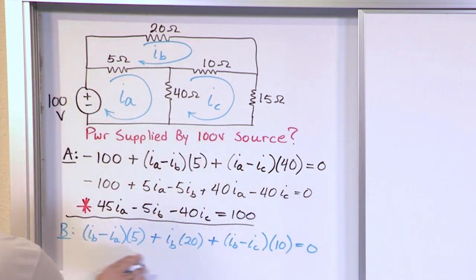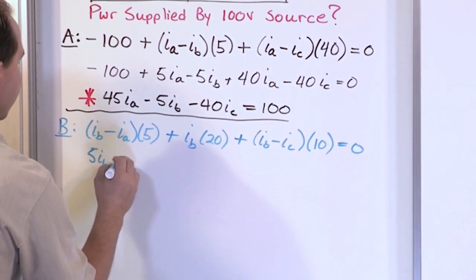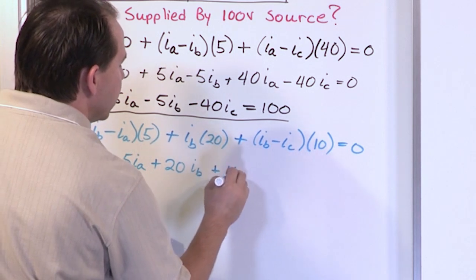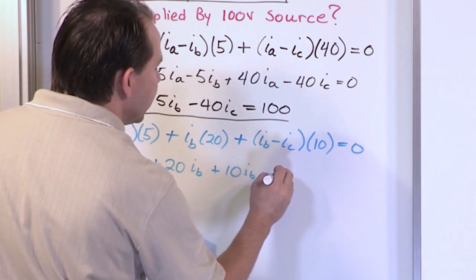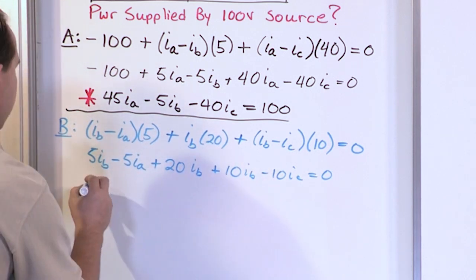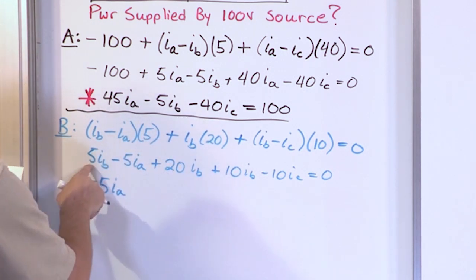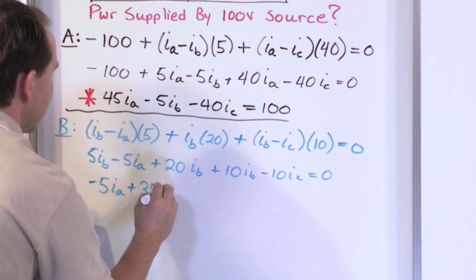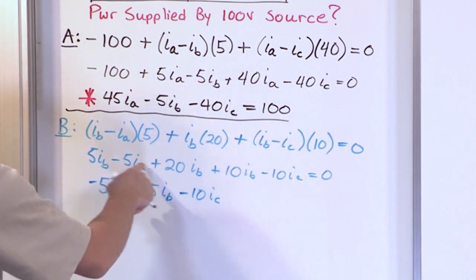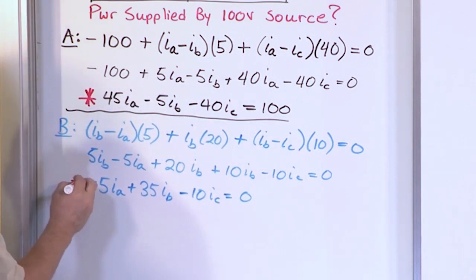Setting the mesh B equation equal to zero and expanding: 5(IB − IA) + 20 IB + 10(IB − IC) = 0. Simplifying and collecting terms: the only IA term is −5 IA; the IB terms are 5 + 20 + 10 = 35 IB; and the IC term is −10 IC. So the mesh B equation is: −5 IA + 35 IB − 10 IC = 0.